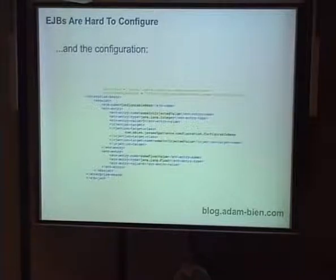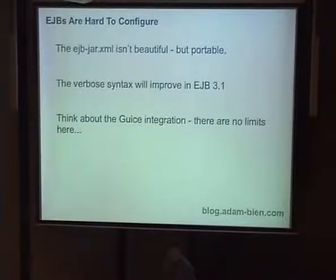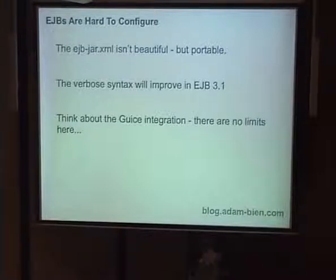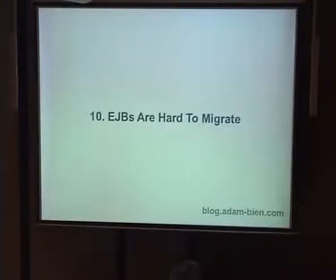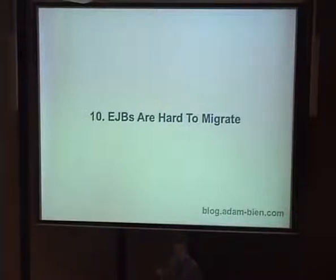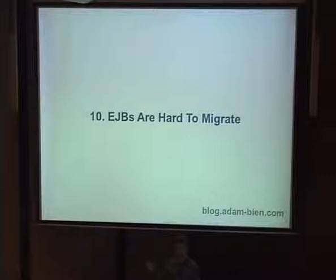It's not beautiful, but portable. It will be improved in EJB 3.1. If you use Juice or Spring, you can inject whenever you want. The Spring guys already have an EJB 3.0 container called Pitchfork — you can download it from Spring Source. They have a working EJB 3.0 container so you can deploy EJBs into Spring. Project Matisse will build EJB 3.1 support in Spring, so you can deploy EJBs into Spring and onto any application server you want.